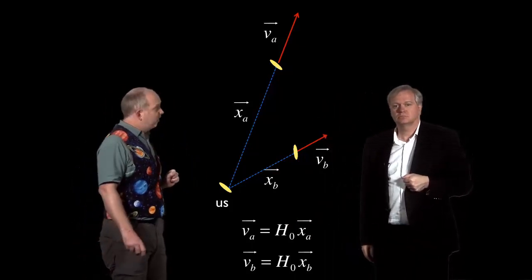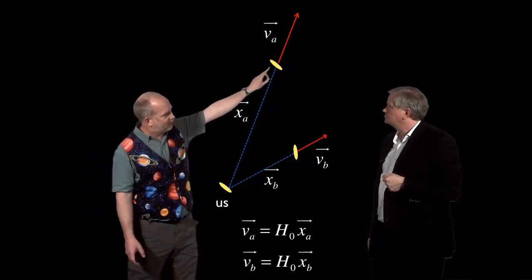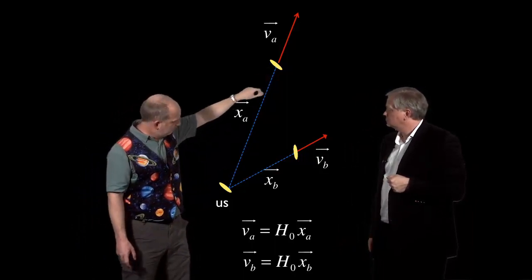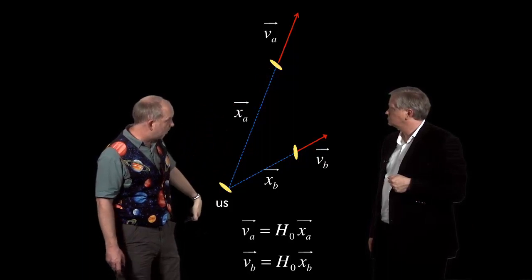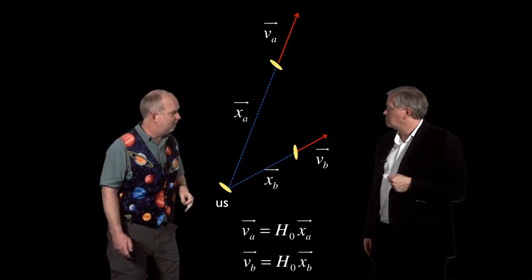But where this vector thing becomes very useful is if you now ask, okay, let's say you've got aliens living on this galaxy here. What would they see? Now, if they look back at us, we would appear to be moving away from them with equal opposite speed. But how about this one over here? What would they see for this other galaxy over here?